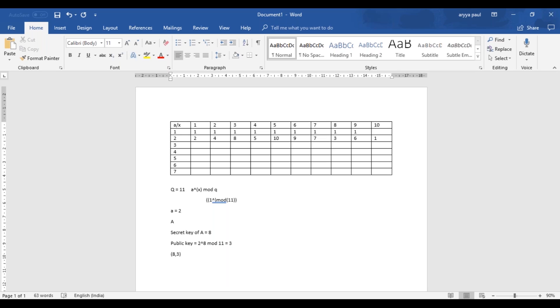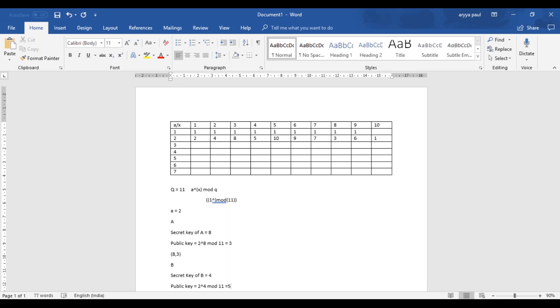Now it's time for B, so we also have to assume the private key for B. The private key is going to be 4. According to the formula again, the public key will be given by 2 raised to 4 modulus 11, so that comes out to be 5. From this we come to know that B's private key is 4 and B's public key is 5. Now that we have both the public keys and private keys of A and B, it's time we generate the keys.